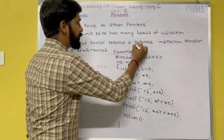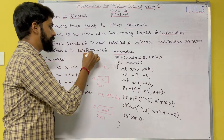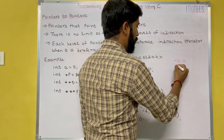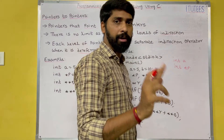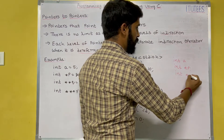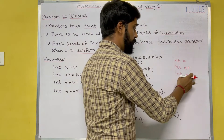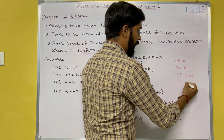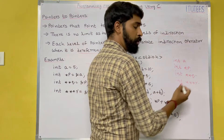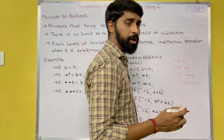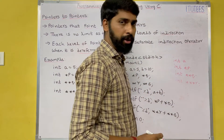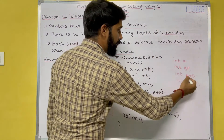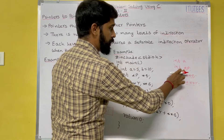Similarly, pointer to pointer to pointer holds the address of a pointer to pointer. Each level of pointer requires a separate indirection operator when it is dereferenced. For example: `int a` is a normal variable; `int *p` uses one asterisk; `int **q` is a pointer to pointer using two asterisks; and `int ***r` uses three asterisks and can hold the address of a pointer to pointer.